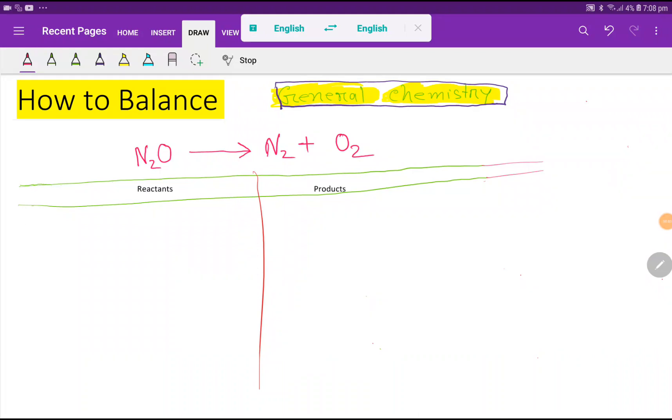Welcome to the channel. Today we are going to balance this reaction: nitrous oxide decomposes into nitrogen and oxygen. To balance this reaction, at first we have to draw a table like this. This is the reactant side and this is the product side.